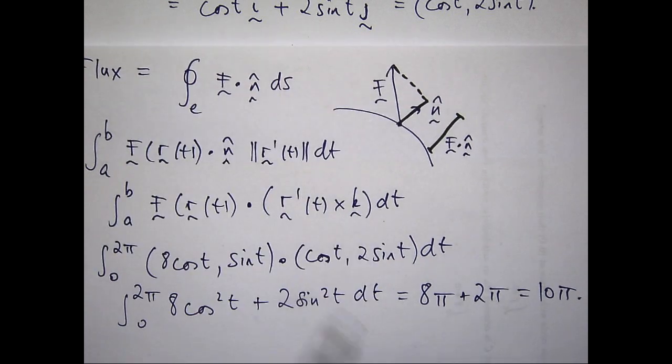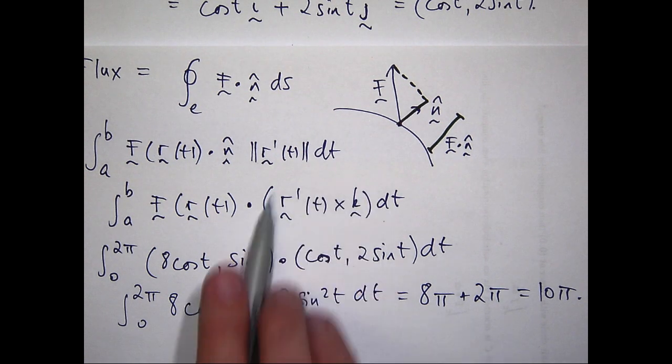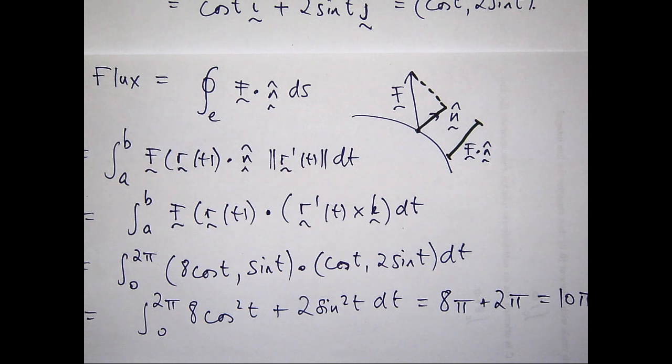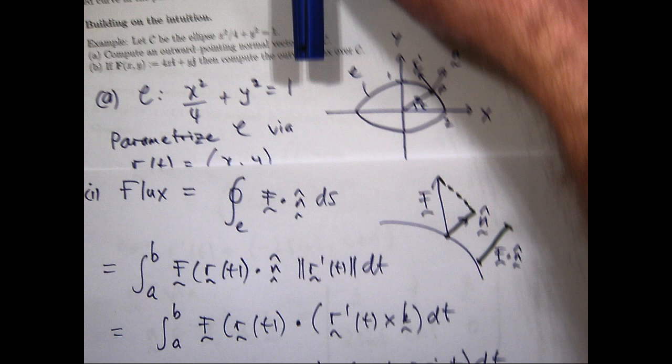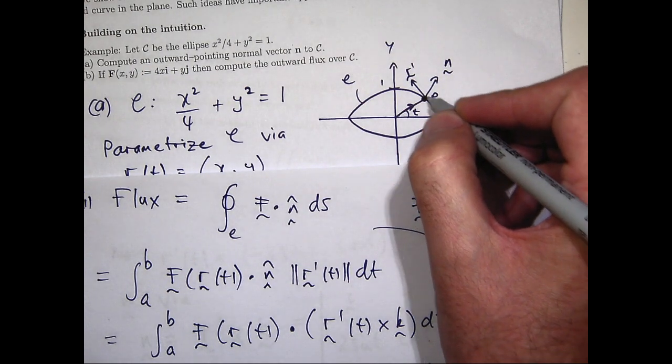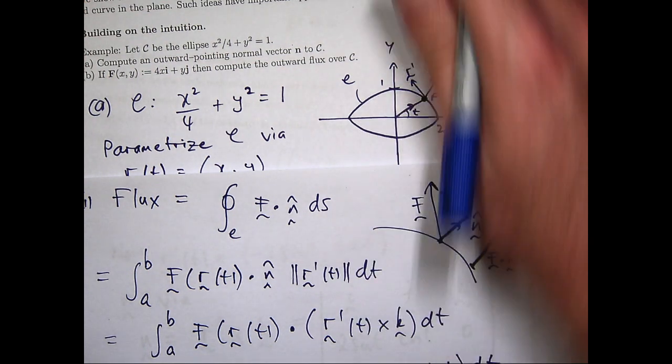That's one way of doing it. Note that we really had to compute this normal vector here through a cross product. Now that's not always necessary. So let me show you another way of doing this problem without the need for a normal vector. Well, if I parameterize my curve c in an anti-clockwise fashion, so as t increases, the curve gets traced out in an anti-clockwise or counter-clockwise direction, then I can use the following.